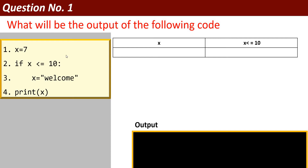What will be the output of the following code? If I execute this code, how will my program be executed? What steps will be involved and what will be the output? First of all, on line number 1, x equals 7. x is a variable that will get a value of 7. This is an assignment statement.